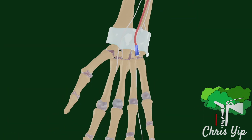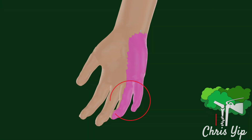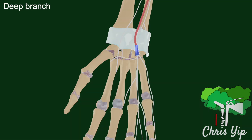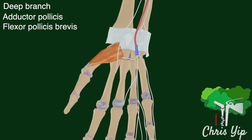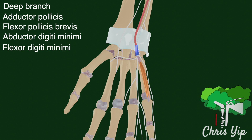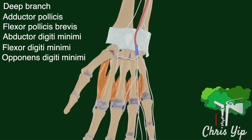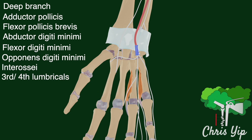As the nerve passes through Guyon's canal, it is divided into superficial and deep branches. The superficial branches provide innervation to the fifth digit and the medial half of the fourth digit. The deep branch innervates muscles such as the adductor pollicis, the flexor pollicis brevis, the three hypothenar muscles including the abductor digiti minimi, the flexor digiti minimi, and the opponens digiti minimi. Finally, it also innervates the interosseous muscles and the third and fourth lumbricals.